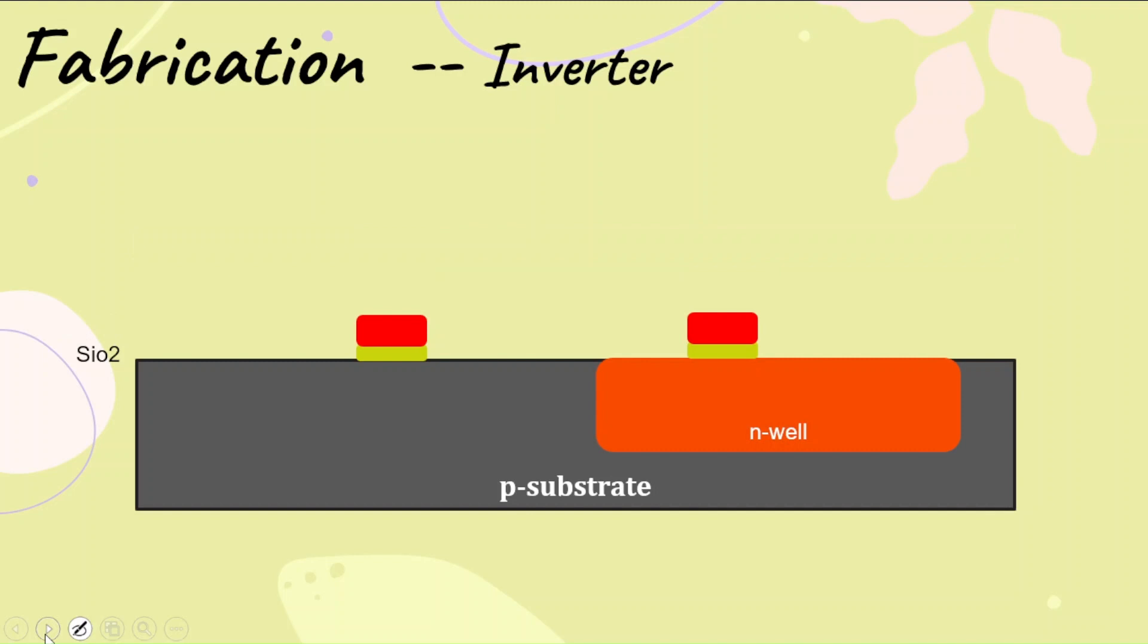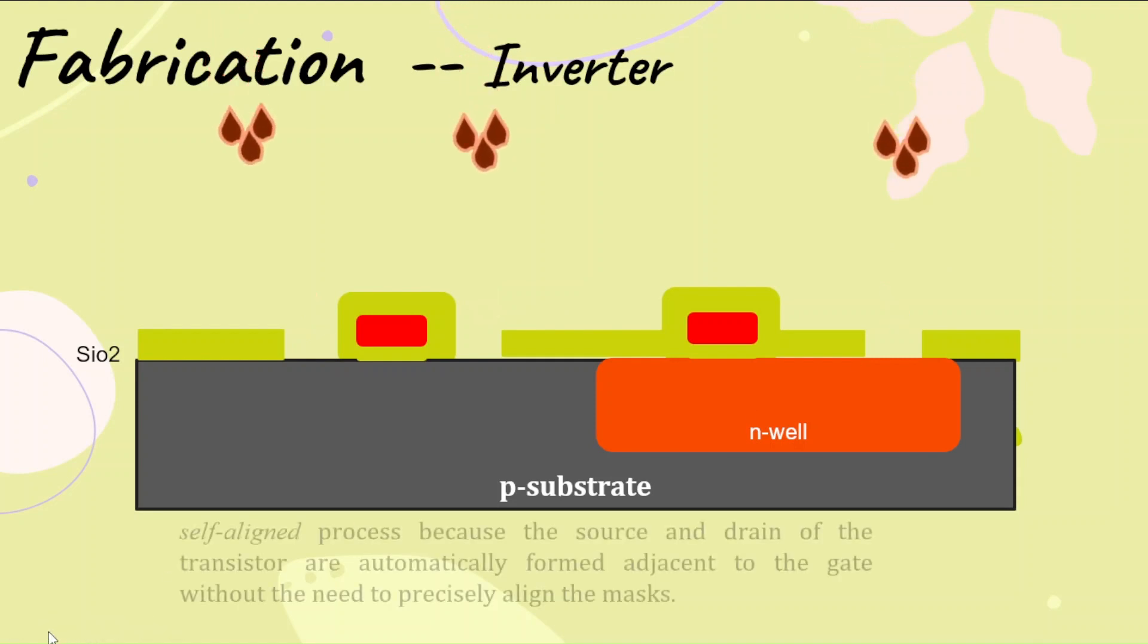In the next step, a thick layer of silicon dioxide is deposited. This thick layer of silicon dioxide is now used for the next step of creating n-plus diffusion. Wherever we require n-plus diffusion, they have removed the silicon dioxide using a mask.